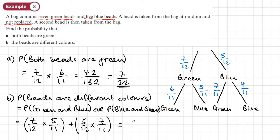So that will give us 35 over 132 plus 35 over 132. That's 70 over 132. And we can divide both of those by two. And that simplifies to 35 over 66.